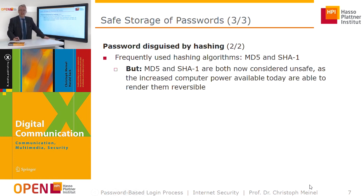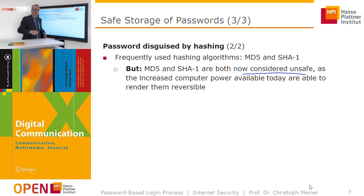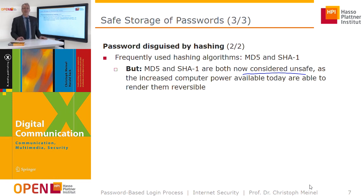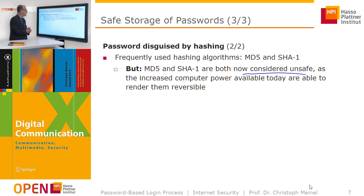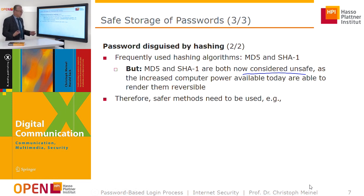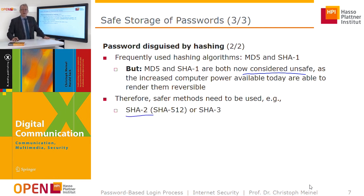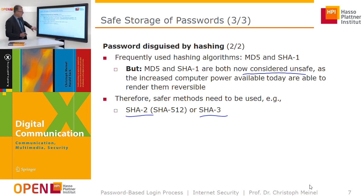Frequently used hash algorithms are MD5 and SHA-1, but both are now considered unsafe. As computers become more powerful, it becomes easier to reveal the original password from the hash. What once required years of computation can now be done in minutes, making these methods insecure. Safer hash methods such as SHA-2, SHA-512, and SHA-3 are available and should be used by all internet services to produce password hashes in user databases.